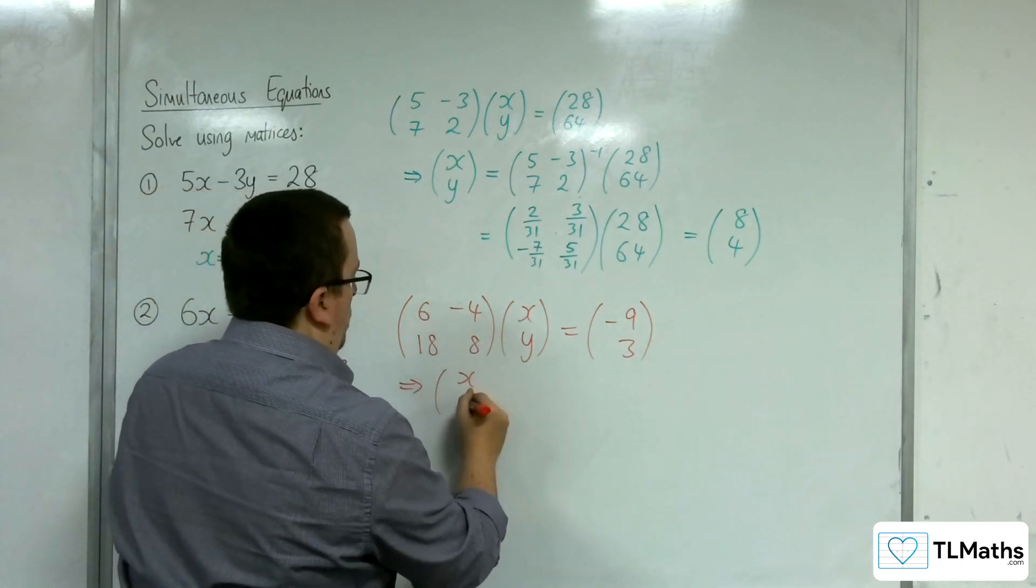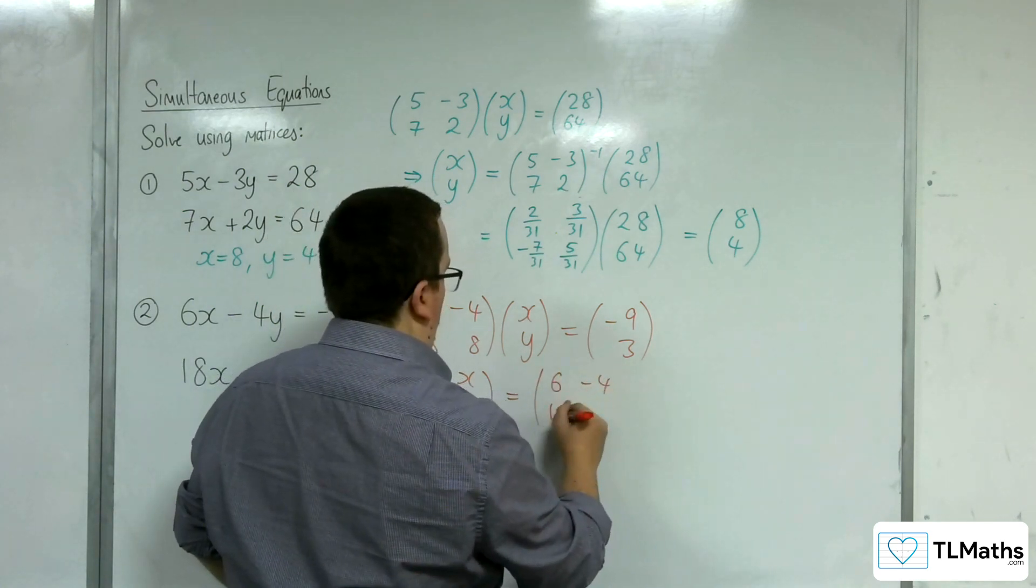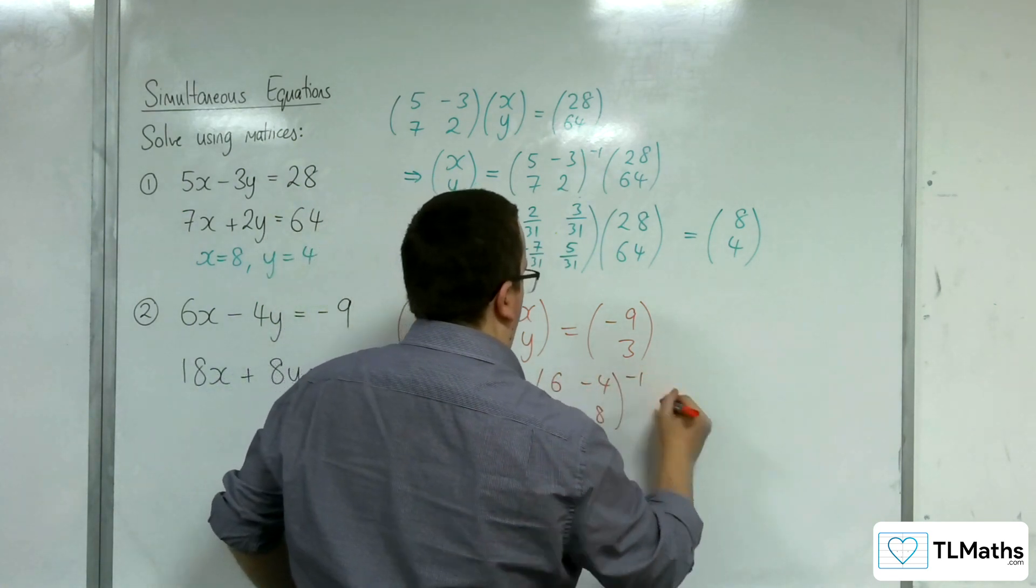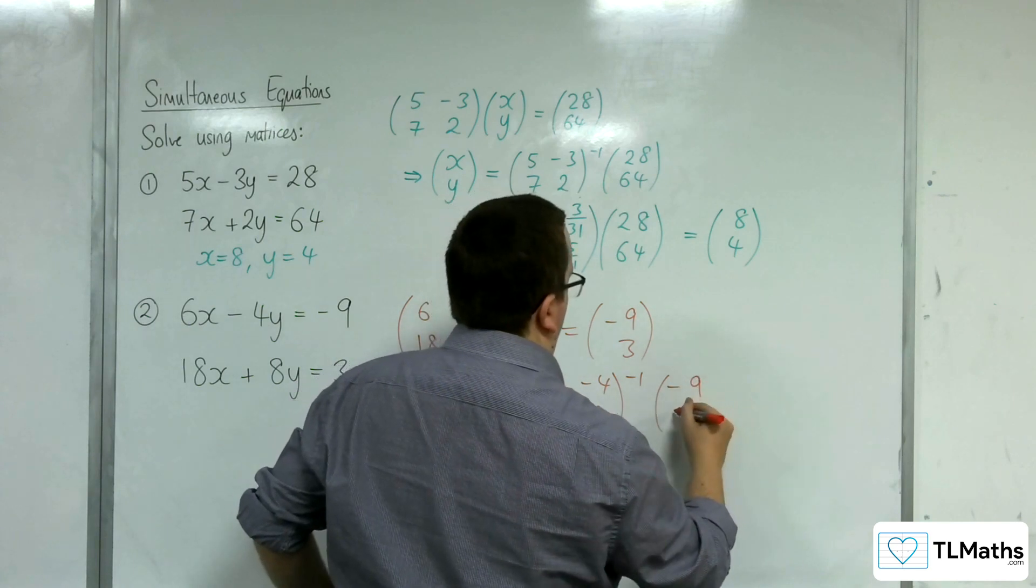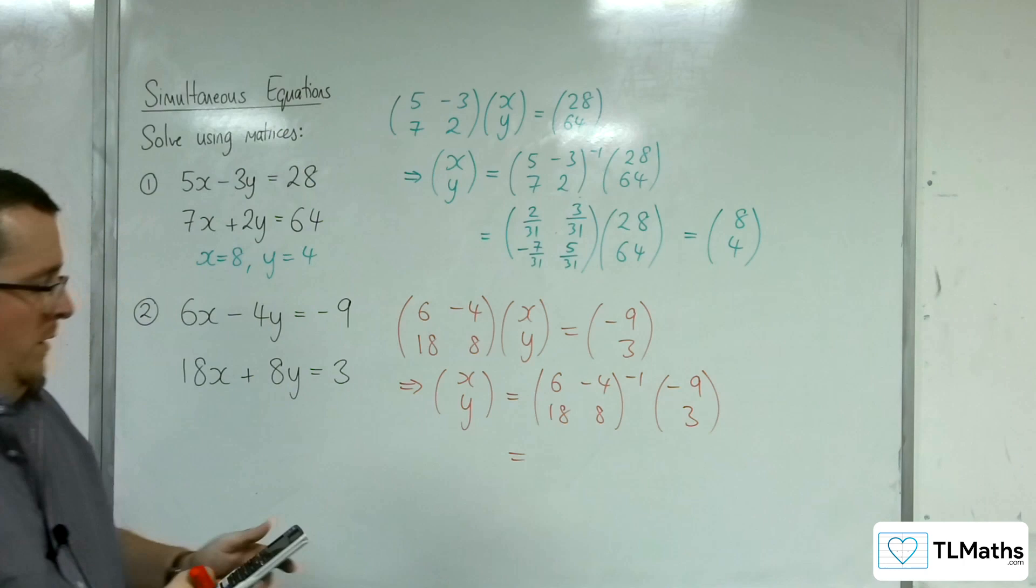So x, y must be the inverse matrix of 6, -4, 18, 8 being applied to -9, 3.